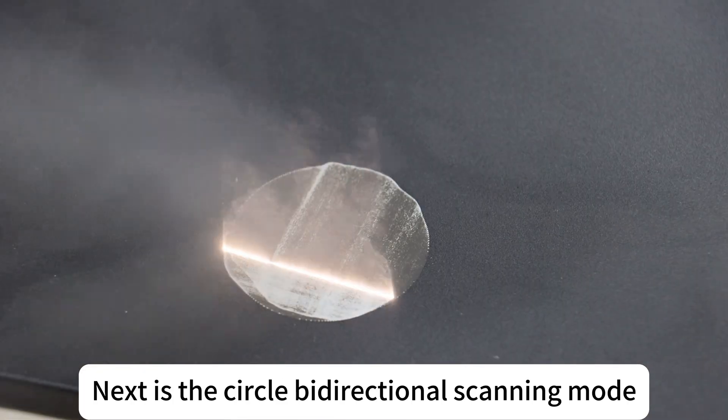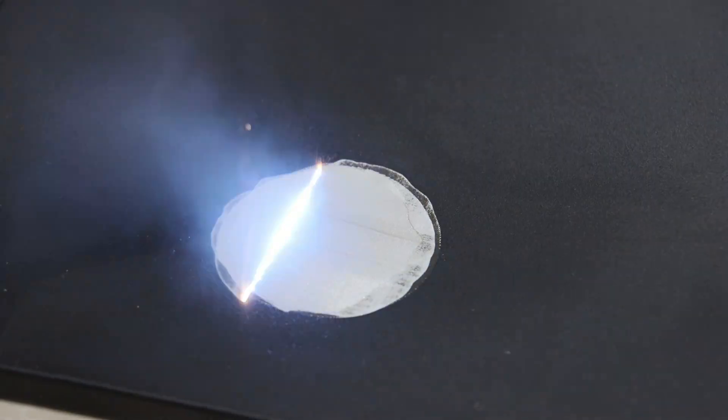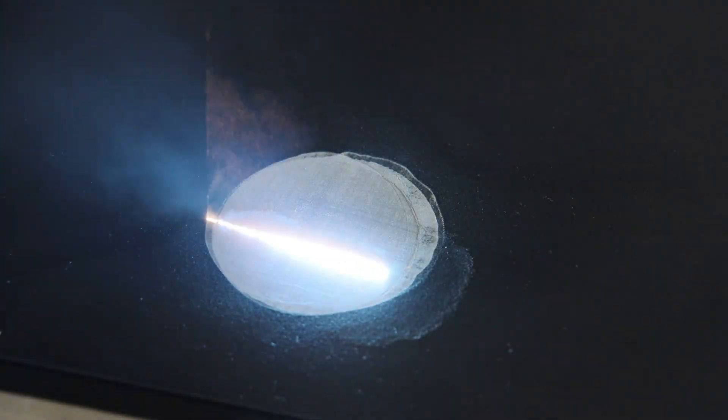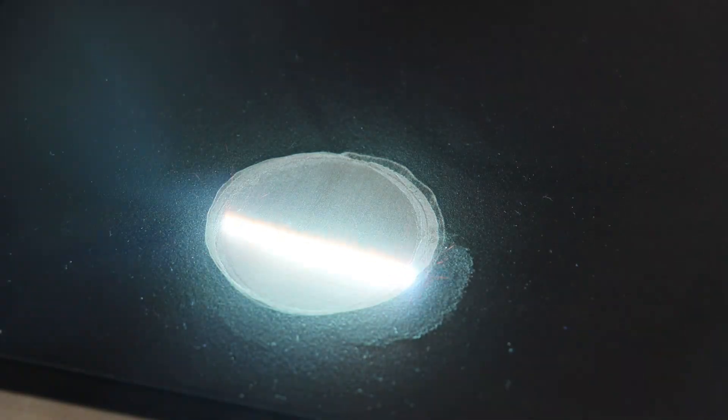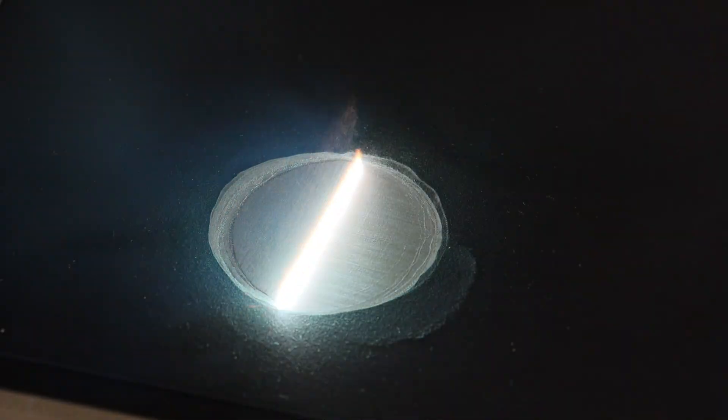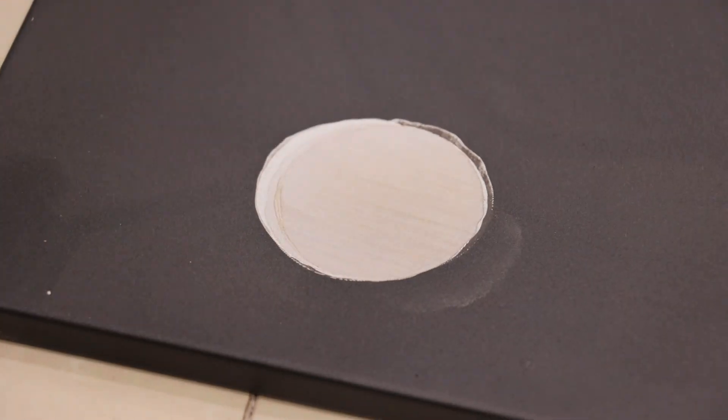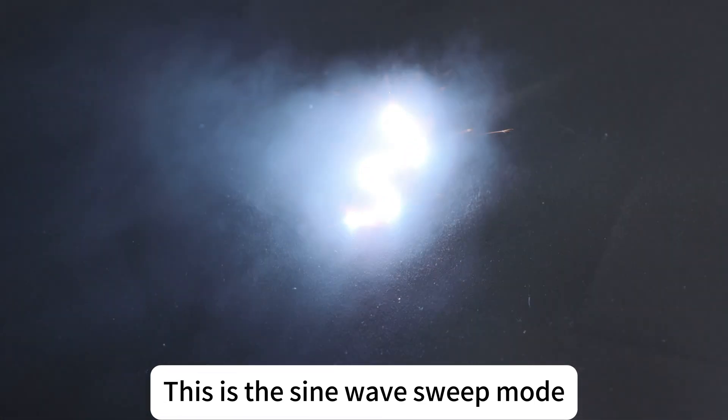Next is the circle bi-directional scanning mode. This is the sine wave sweep mode.